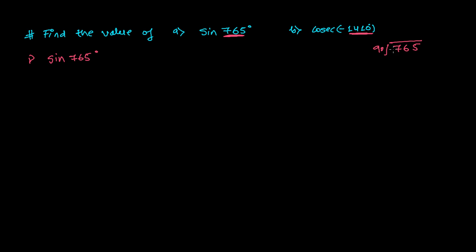Dividing 765 by 90: 9 eights are 72, so 8 times 90 is 720. The remainder is 765 minus 720, which gives 45. So sine 765 equals sine of 8 times 90 degrees plus 45 degrees.